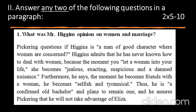Section 2, Question 1: What was Mr. Higgins' opinion on women and marriage? Pickering questions if Higgins is a man of good character where women are concerned. Higgins admits he has never known how to deal with women because the moment you let a woman into your life, she becomes jealous, exacting, suspicious, and a damned nuisance. Furthermore, the moment he becomes friends with a woman, he becomes selfish and tyrannical. Thus, he is a confirmed old bachelor and plans to remain one, and he assures Pickering that he will not take advantage of Eliza.